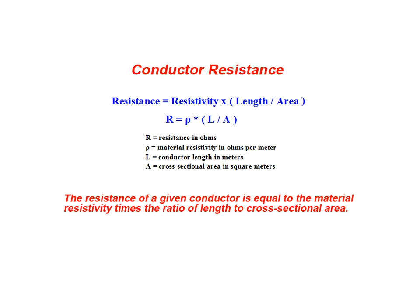For this relationship to be valid, resistance must be given in ohms, material resistivity in ohms per meter, conductor length in meters, and cross-sectional area in square meters.